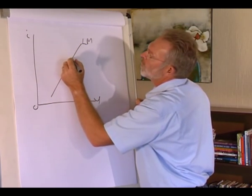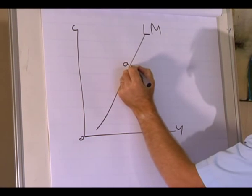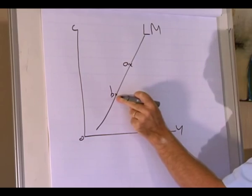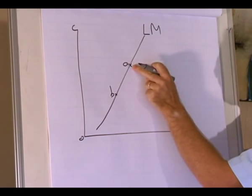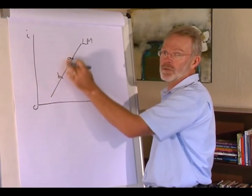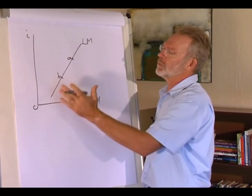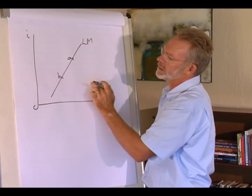we want to know what are the differences between point A and point B on the LM curve. Now before we compare point B with point A, we must remember the LM curve is derived for a given supply of money. So the money supply didn't change in this comparison.